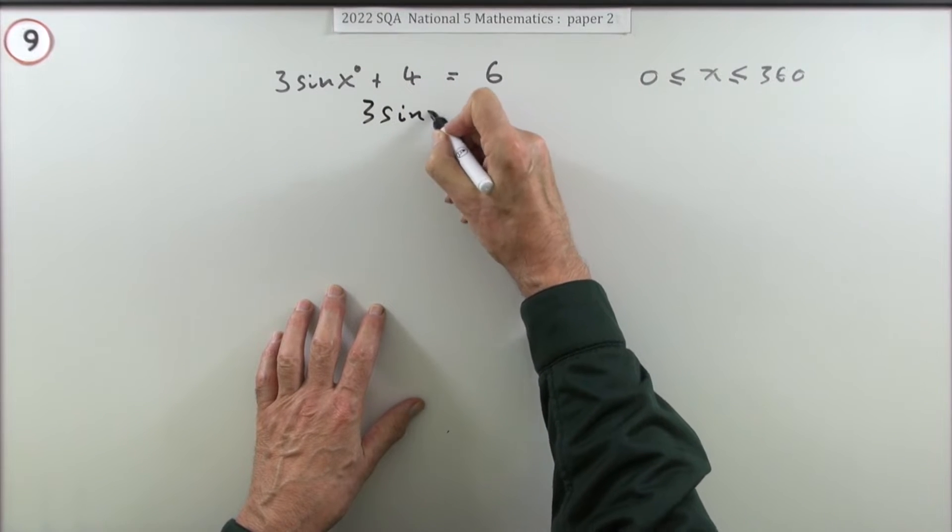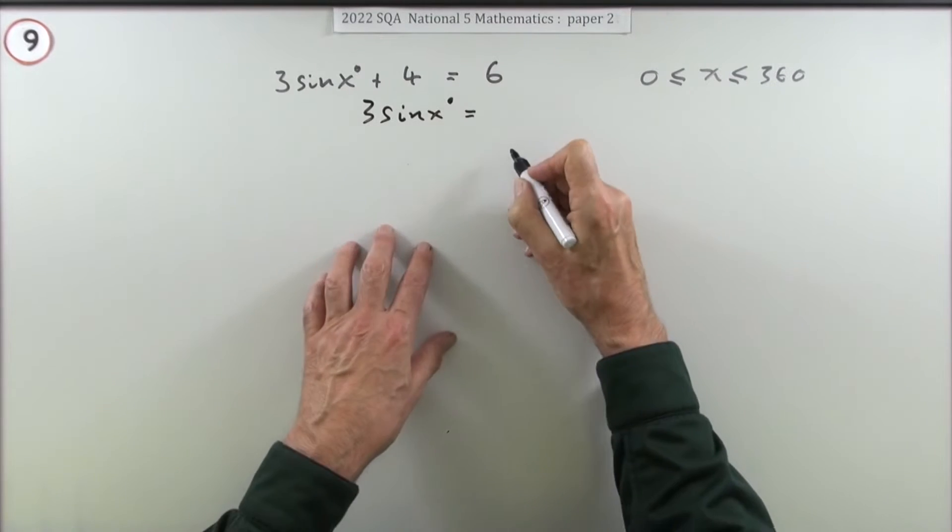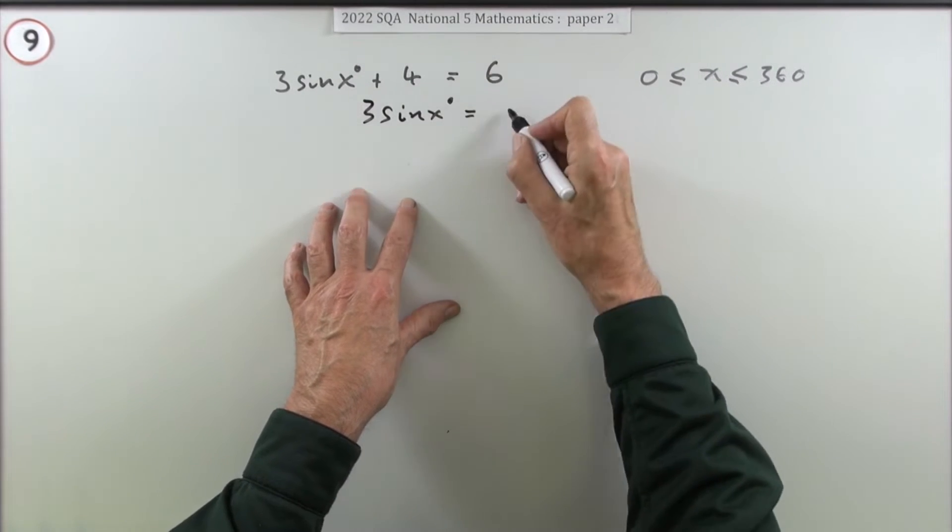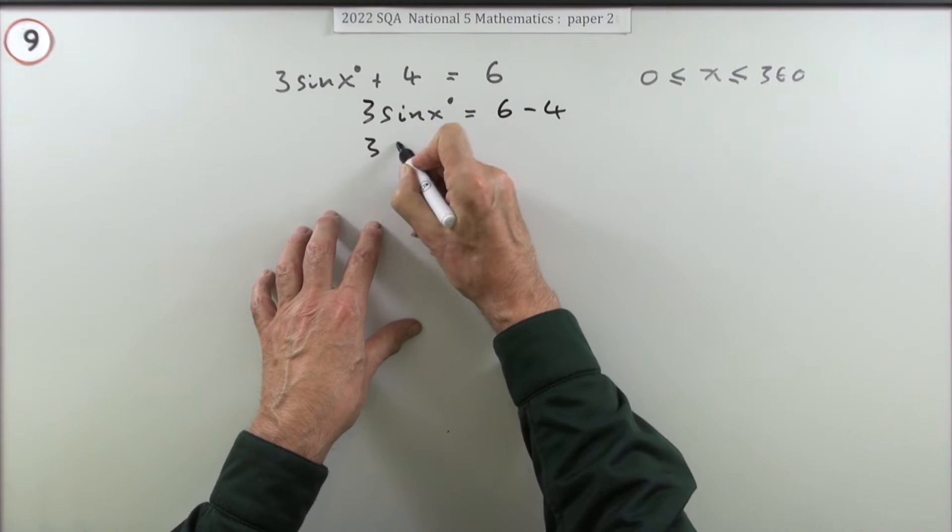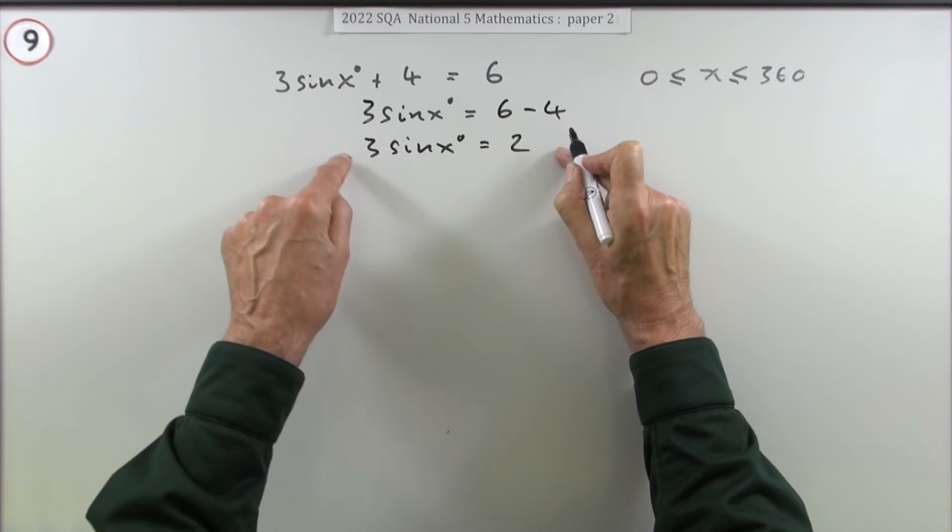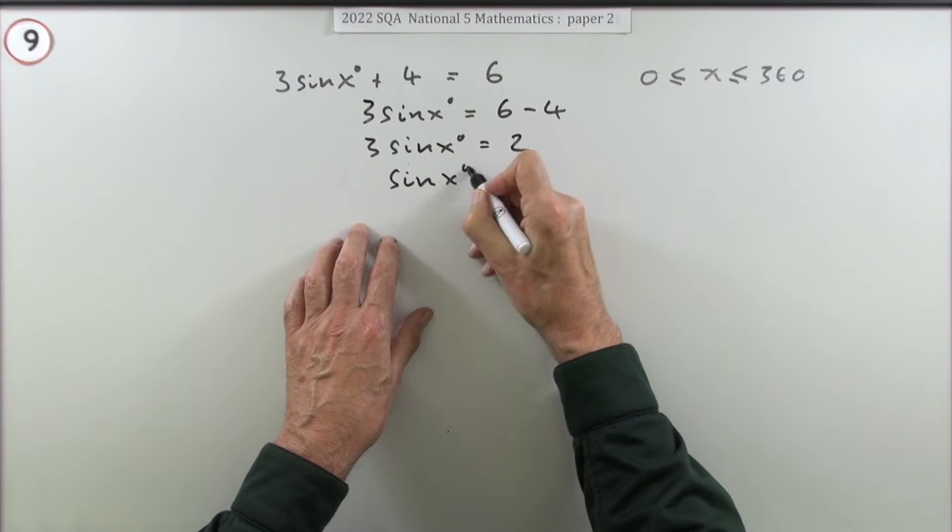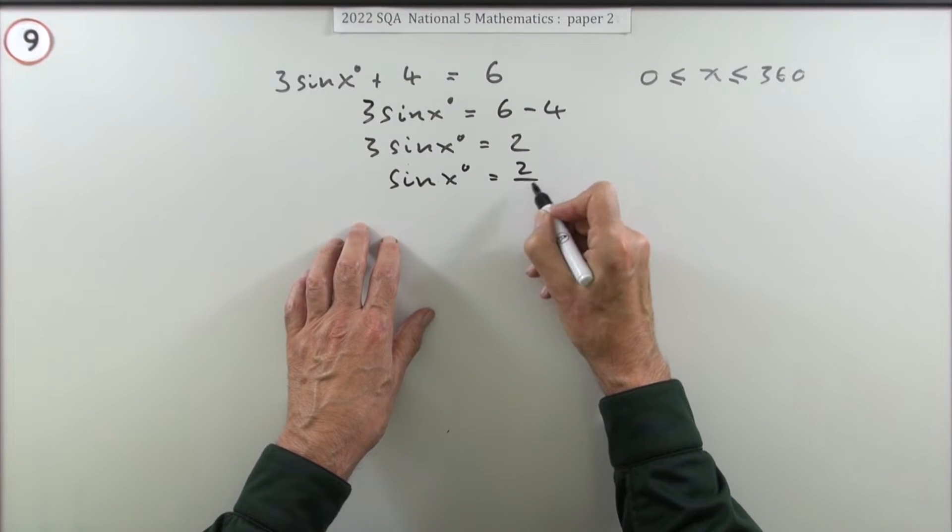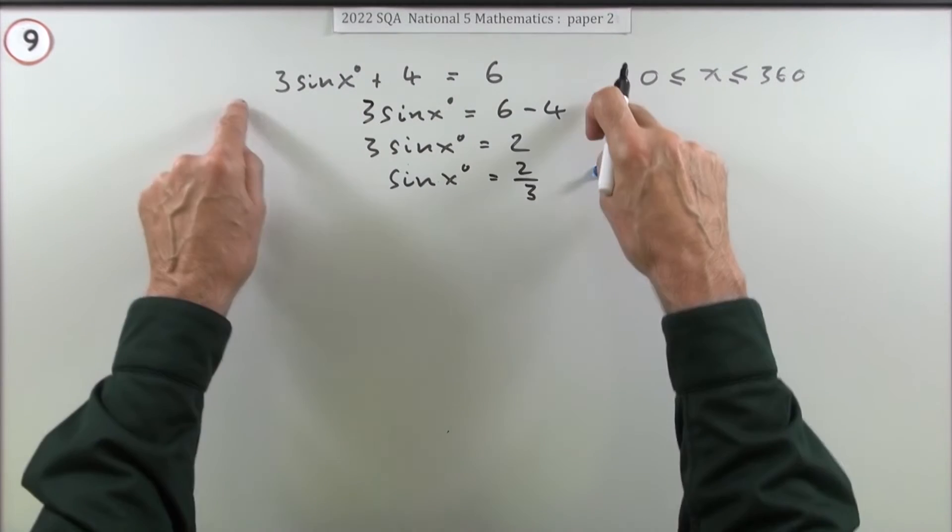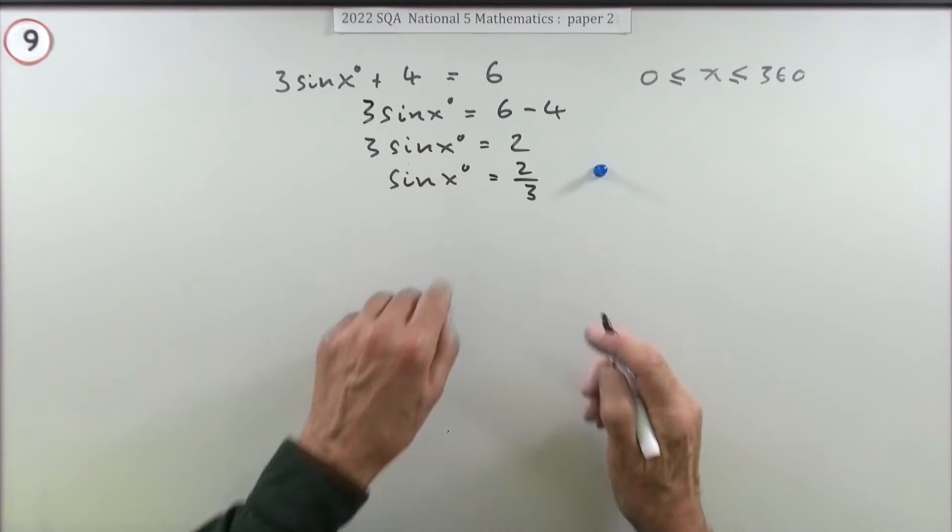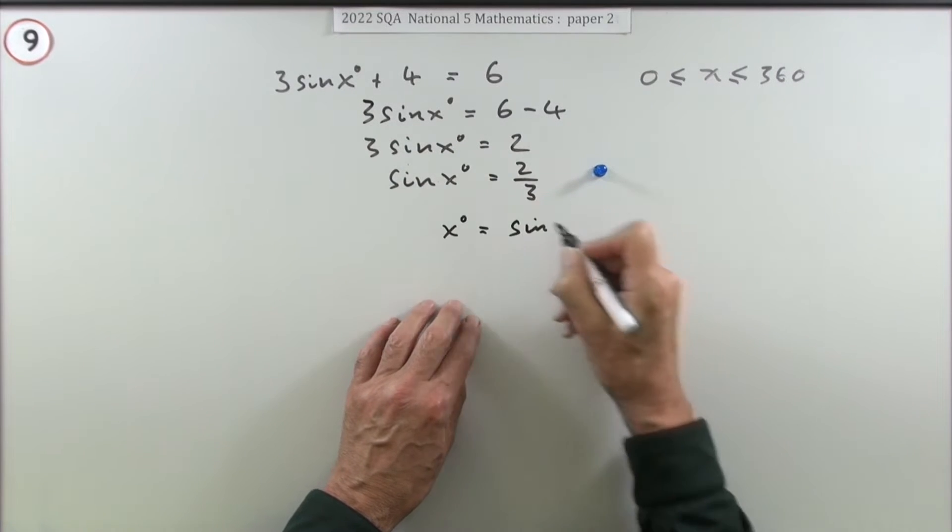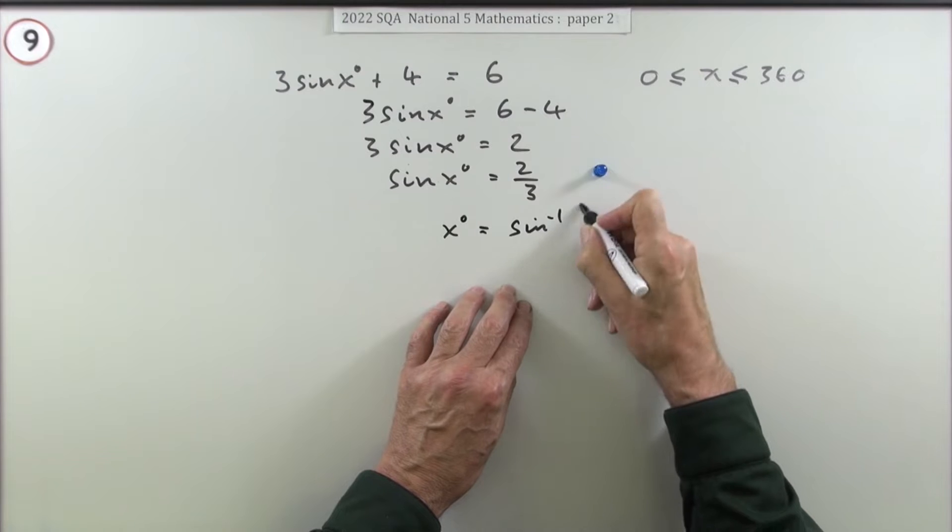The first stage: 3sin(x²) + 4 = 6. Take away the four to get 3sin(x²) = 2, you could have gone straight to there. Then divide by three so you get down to sin(x²) = 2/3. At that point you get the first mark because you've finished the easy bit of solving the equation. Now you've got to find x, so x = sin⁻¹(2/3).